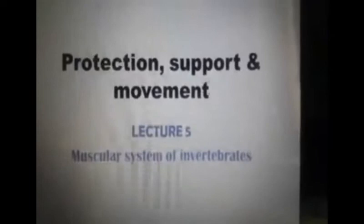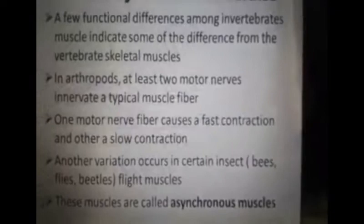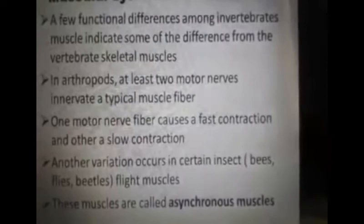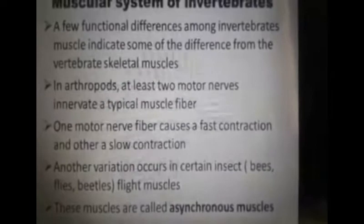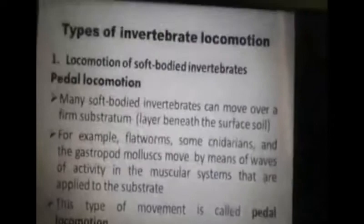Bismillah ar-Rahman ar-Rahim. Assalamu alaikum students. In this segment we discuss the muscular system of invertebrates. A few functional differences among invertebrate muscles indicate some differences from vertebrate skeletal muscle. In arthropods, at least two motor nerves innervate a typical muscle fiber — one motor nerve fiber causes fast contraction and another is responsible for slow contraction. Another variation occurs in certain insects: the flight muscles of bees, flies, and beetles, which are called asynchronous muscles.